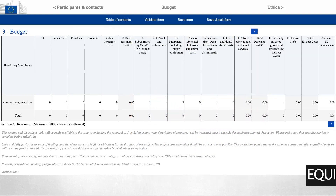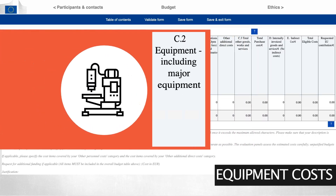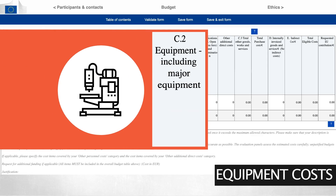If you need to use specific equipment in your project, you should include it in your budget. By default, you may only charge the depreciation cost of the equipment, which corresponds to actual use of the equipment during the project's duration, or renting or leasing costs. In exceptional cases, where necessary for the viability of the project, it is possible to charge the full purchase price of the equipment.